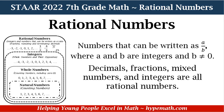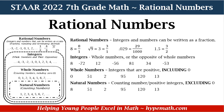If you look at our Venn diagram, you can see that the first inner circle is natural numbers, then whole numbers, then integers, and then it encapsulates all of the rational numbers. Let's look at some examples of rational numbers.